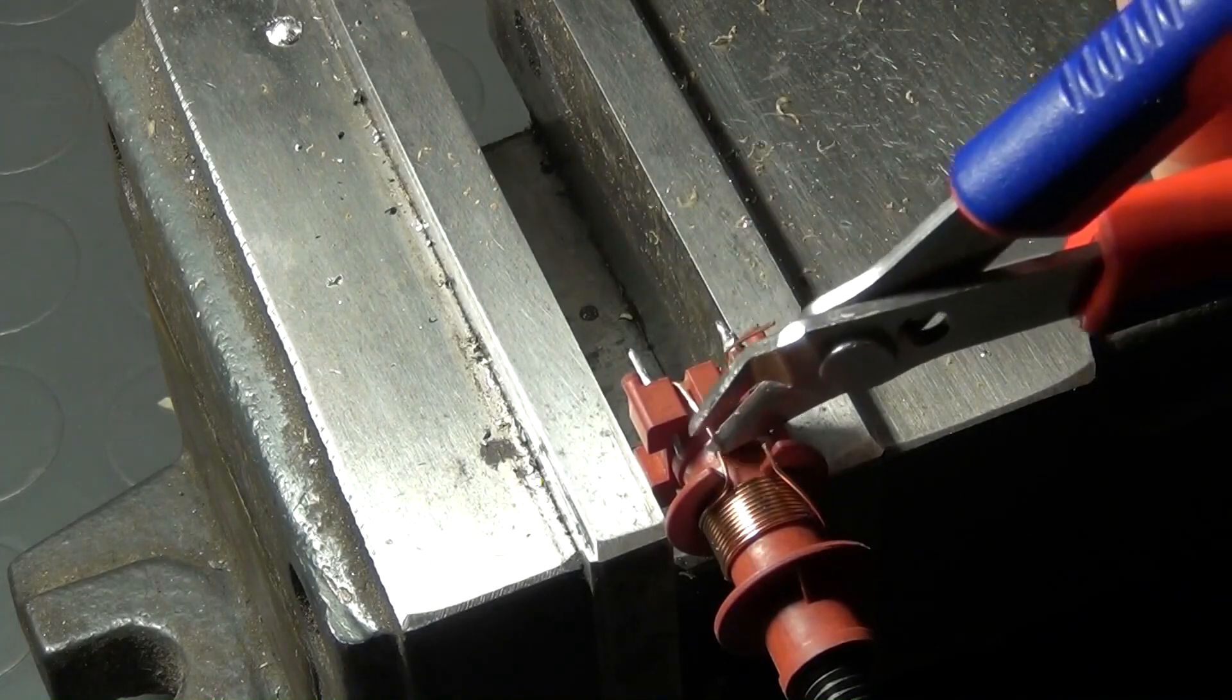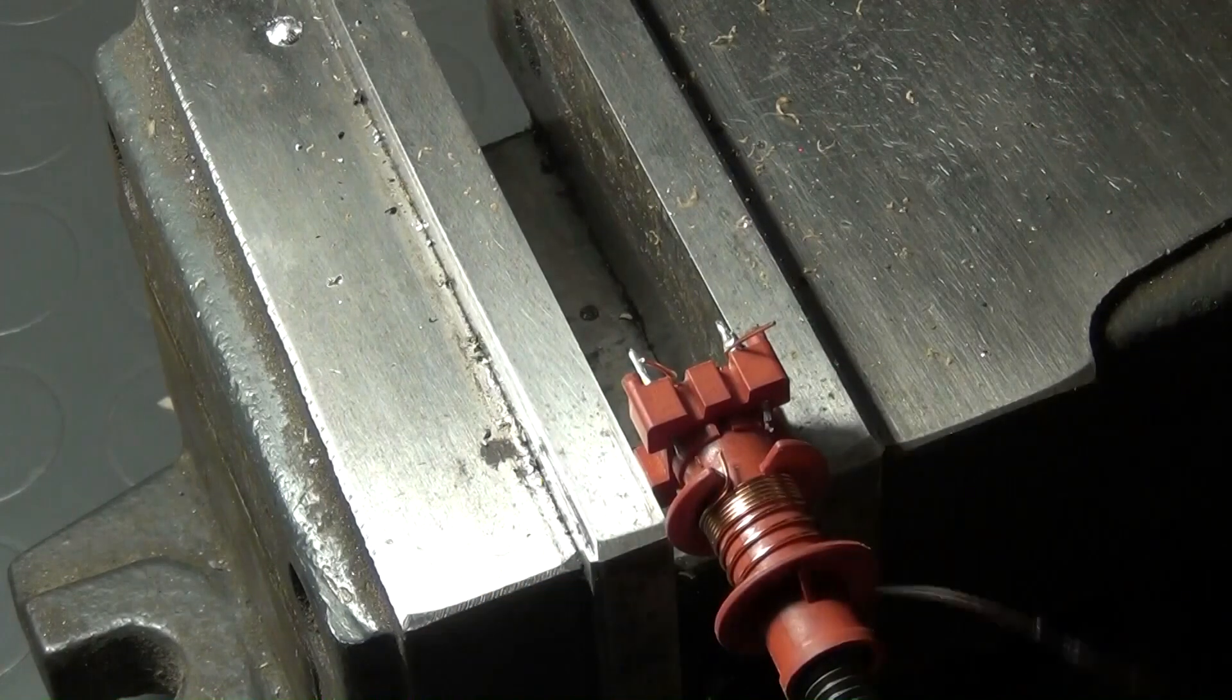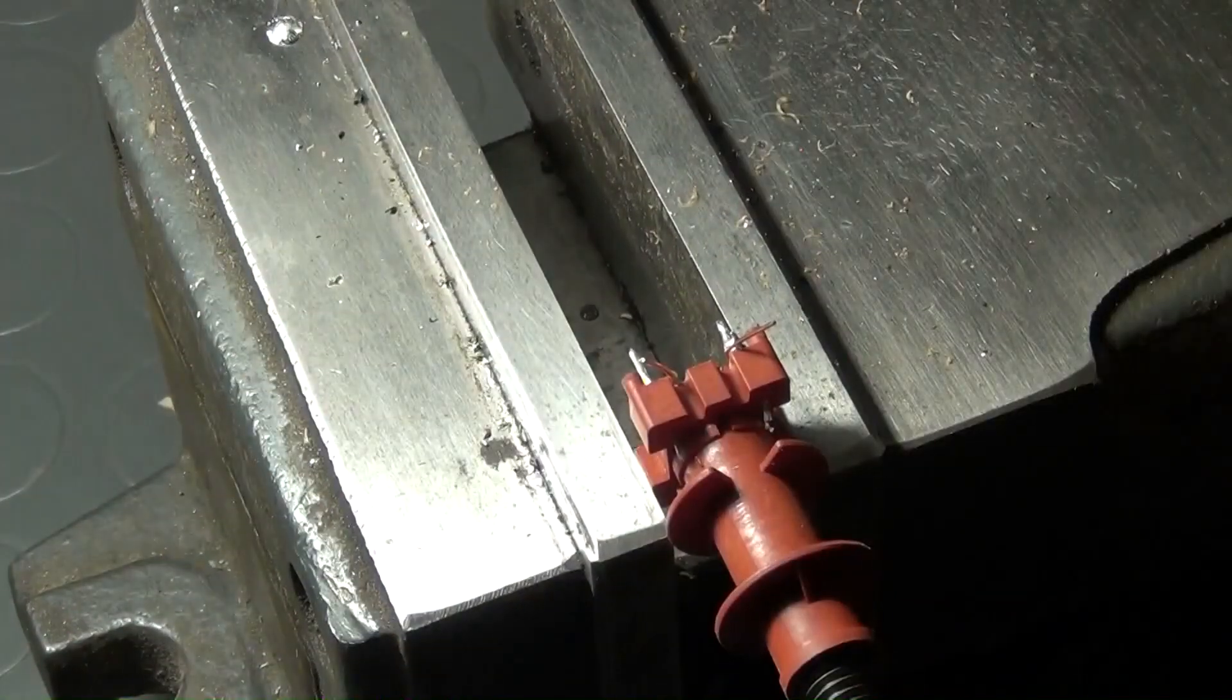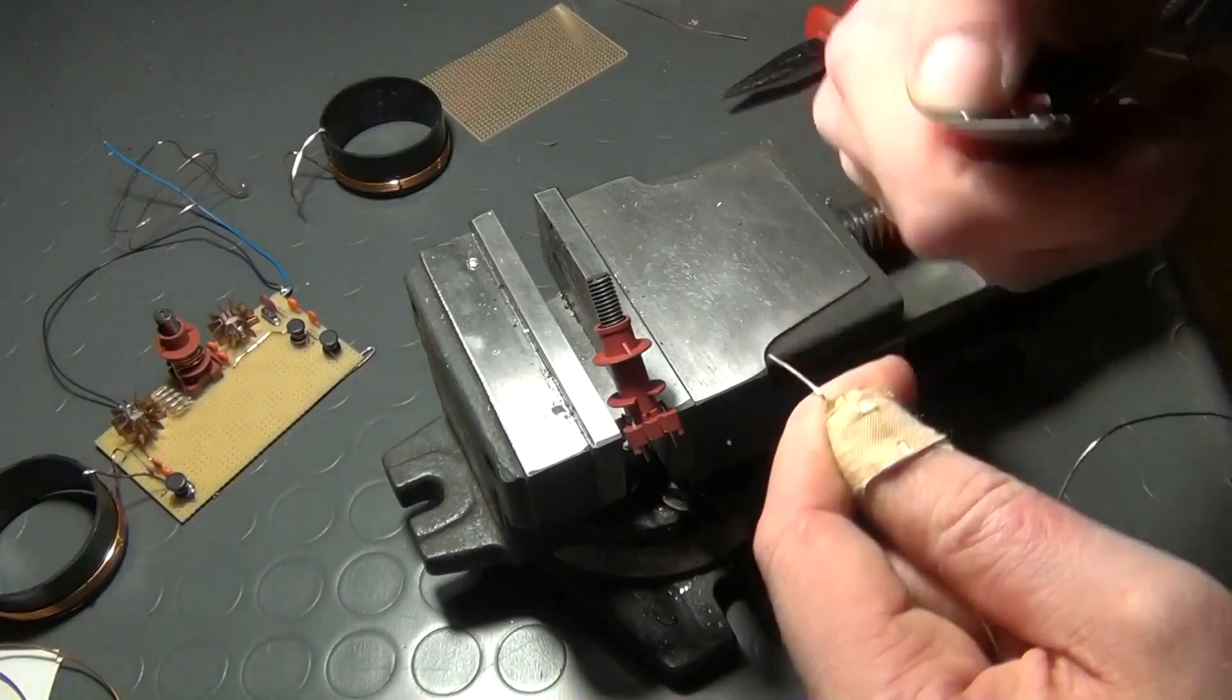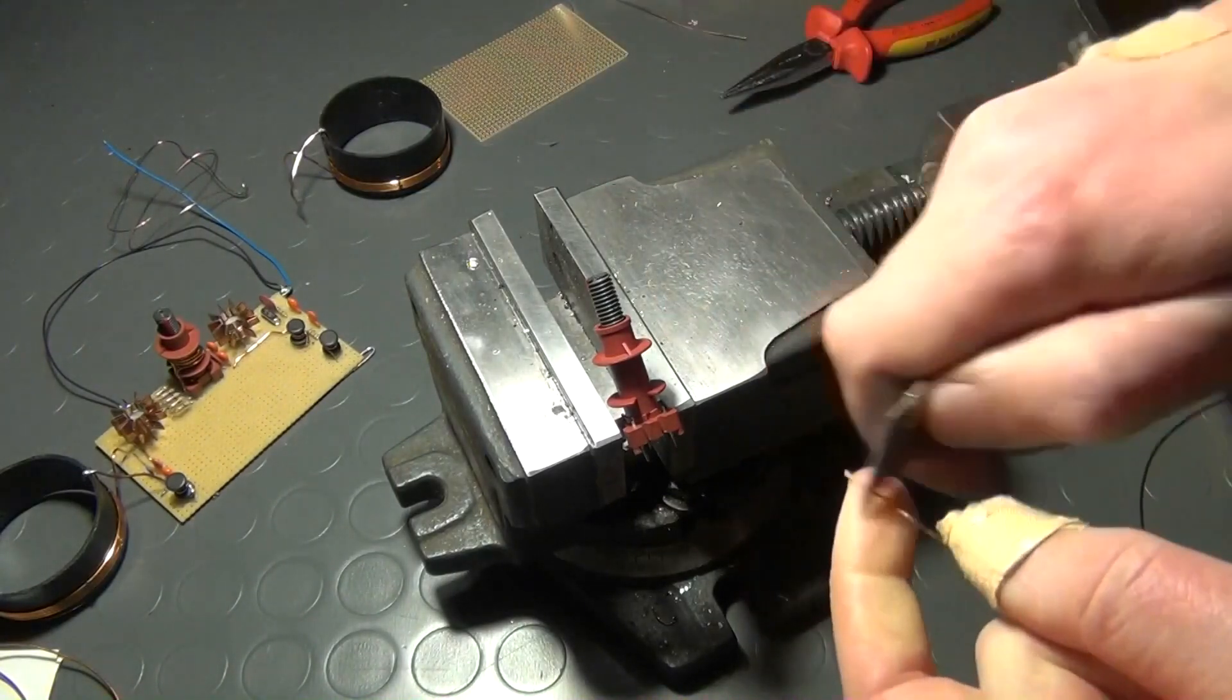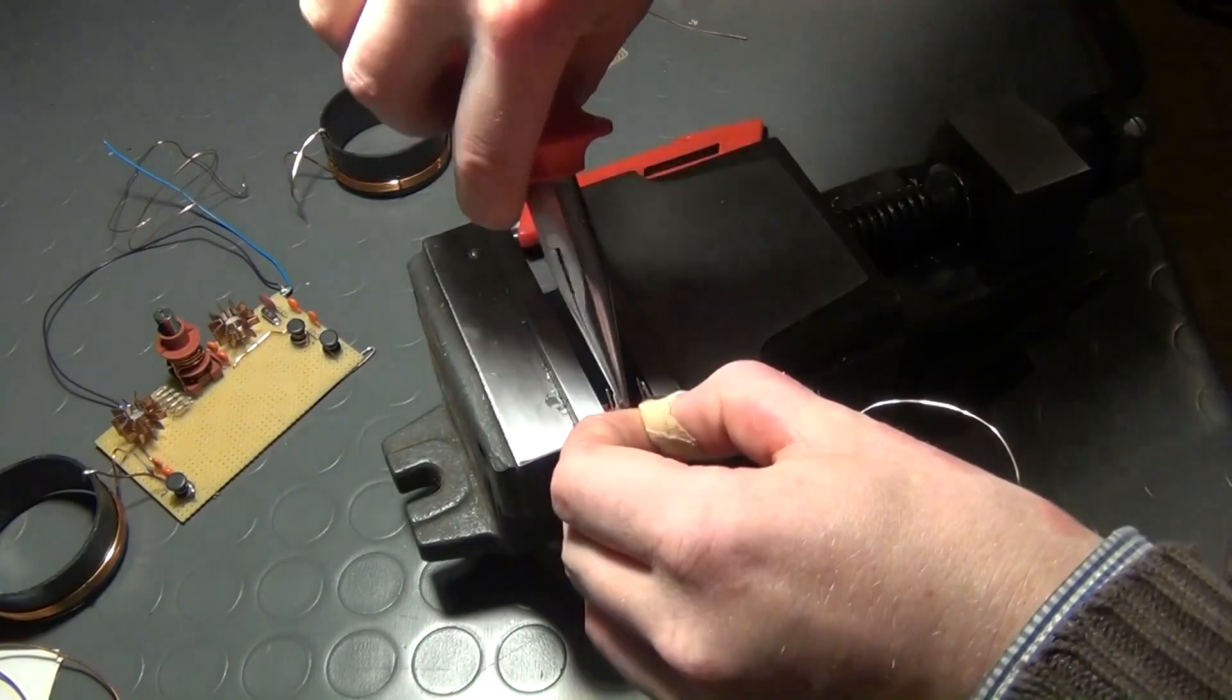Because you will probably only find it as a used part, it's necessary to get rid of its old winding first. After the old winding is completely removed, a piece of magnet wire is freed from the insulating varnish at one of its ends, which is then tightened around one of the pins at the base of the bobbin.